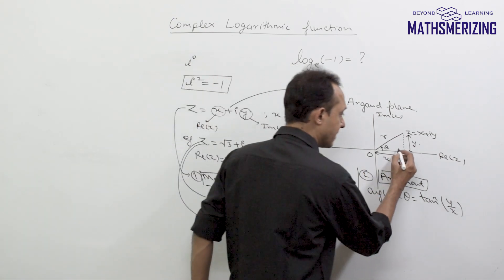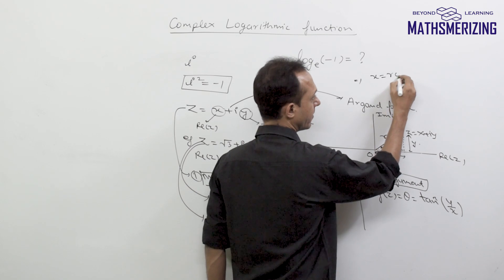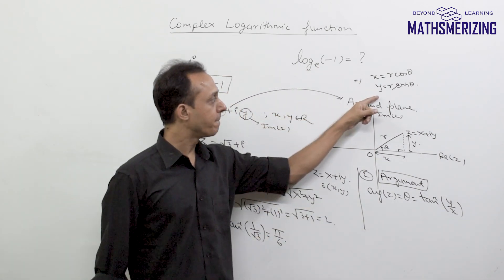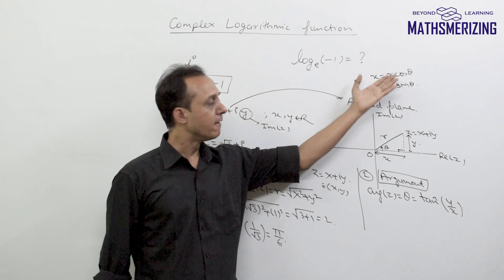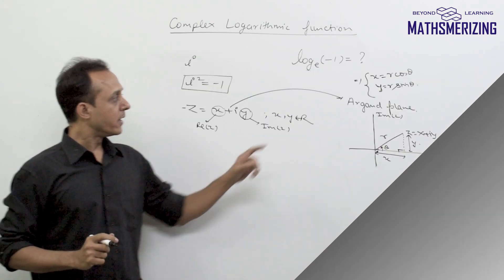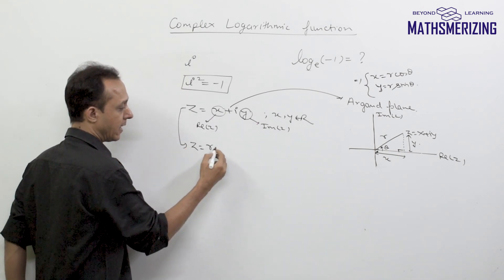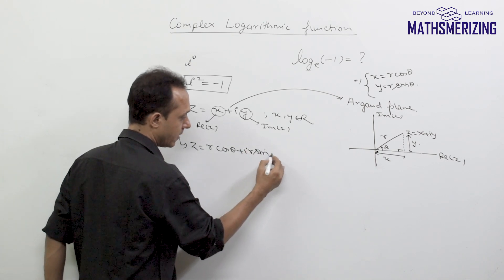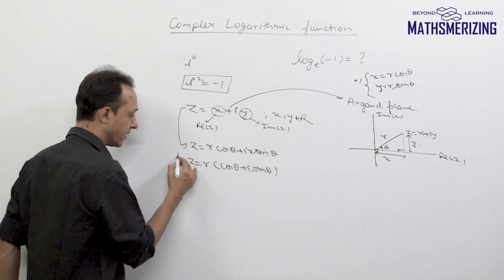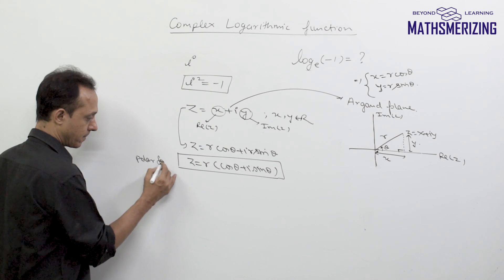Looking at the right-angle triangle, we can clearly say that x = r cosθ and y = r sinθ. By comparing x and y we can find r and θ — another way of finding the modulus and argument. Since x = r cosθ and y = r sinθ, we can write the complex number z as r cosθ plus iota r sinθ, and taking r common: z = r(cosθ + iota sinθ). This is called the polar form of a complex number.